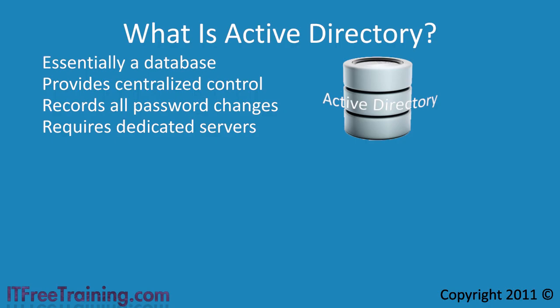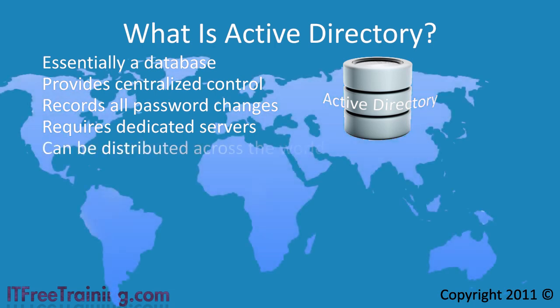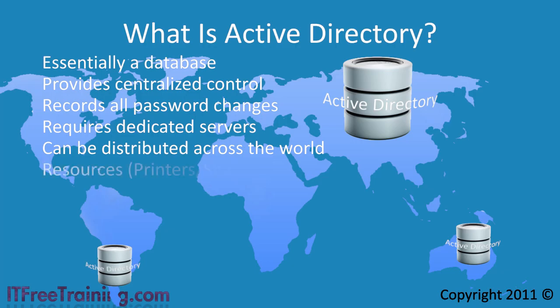So now that you understand why you would need a system like Active Directory, what exactly is Active Directory? Active Directory provides centralized control over your network but is still flexible enough that it can be distributed across the world. We already know that it can be used to store usernames and passwords, but it can also be used to store resources — things such as printer information and share information can be stored in Active Directory.